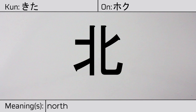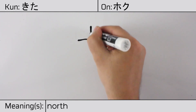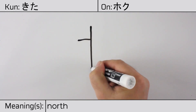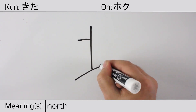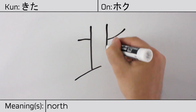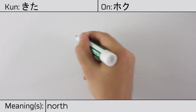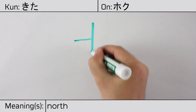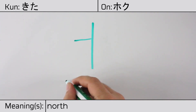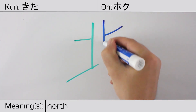Here is the stroke order. This character is made up of the following radicals or parts: shouhen on the left, meaning to split wood, and the spoon radical on the right.